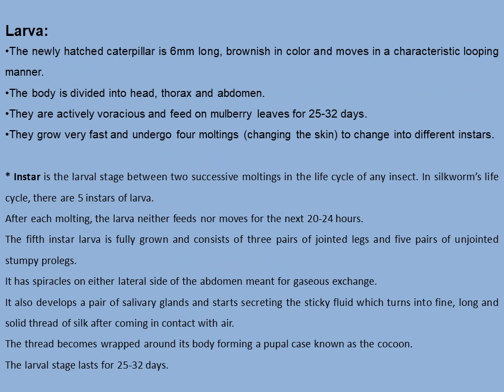Eggs hatch into larvae within 10 to 12 days. The newly hatched caterpillar — larvae of Lepidopterans are termed caterpillars — is 6 millimeters long, brownish in color, and moves in a characteristic looping manner. The body is divided into head, thorax, and abdomen. They are actively voracious and feed on mulberry leaves for about 25 to 32 days. They grow very fast and undergo four molts, changing into different instars. An instar is the stage between two successive moltings in the life cycle of any insect.